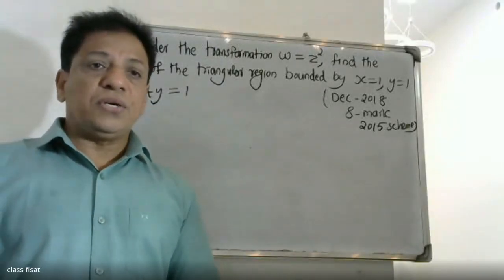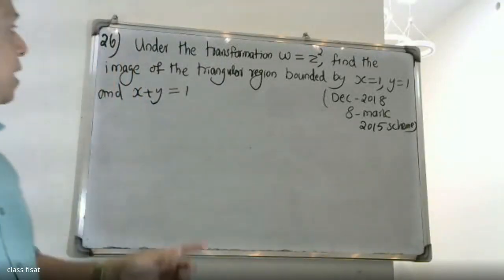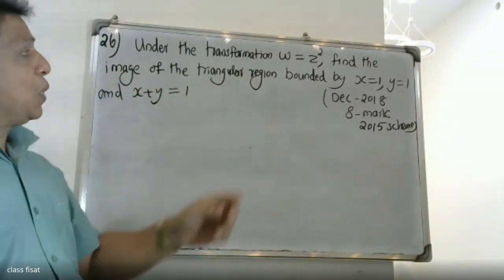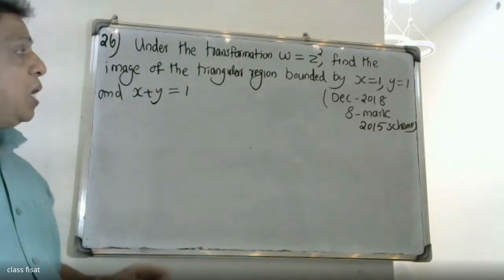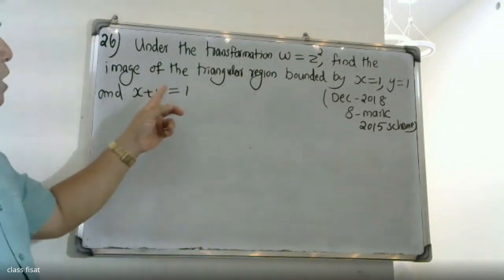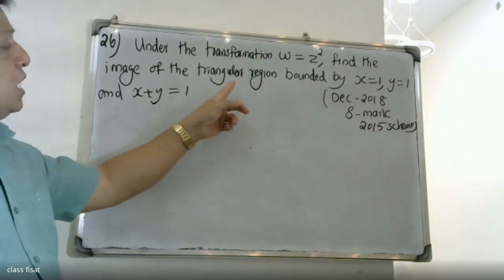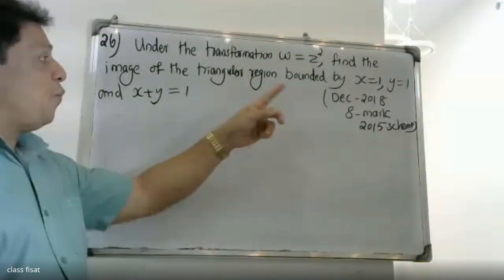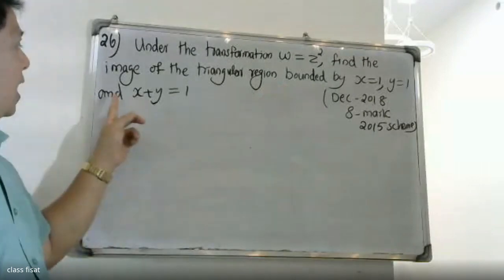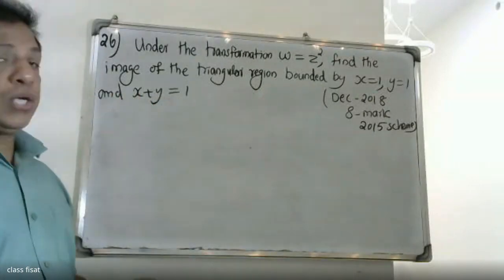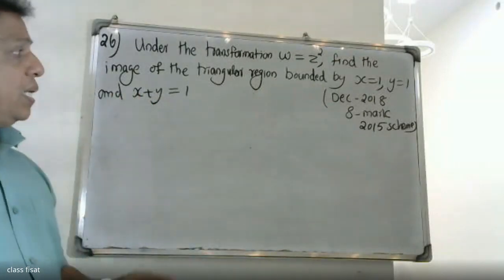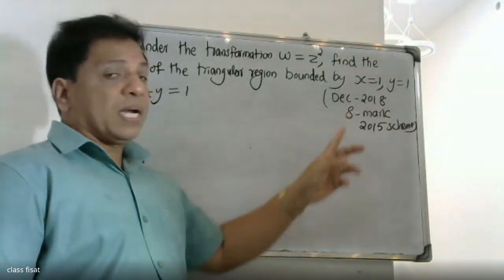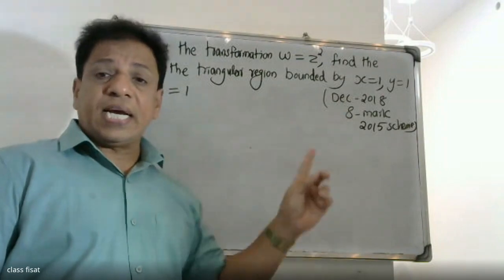Good morning students. Under the transformation w equal to z squared, find the image of the triangle region bounded by x equal to 1, y equal to 1, and x plus y equal to 1.